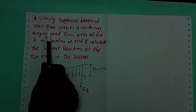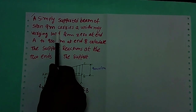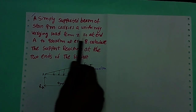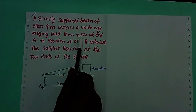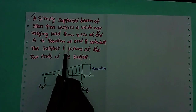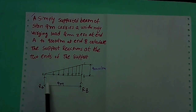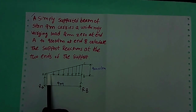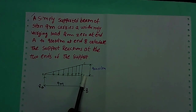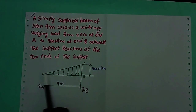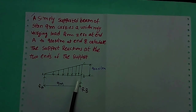A simply supported beam of span — span means length — 9 meters, carries a uniformly varying load, also called UVL. From 0 at A to 900 N per meter at B. The load varies from 0 to 900 N/m from A to B. Calculate the support reactions at the two ends.